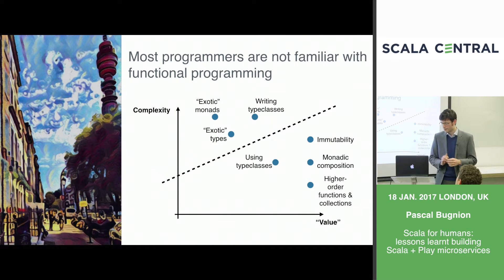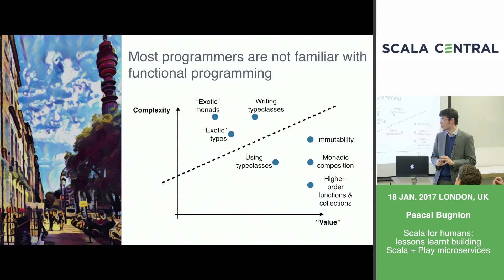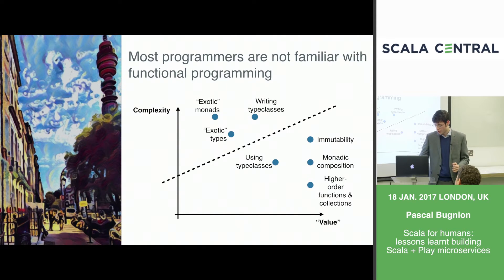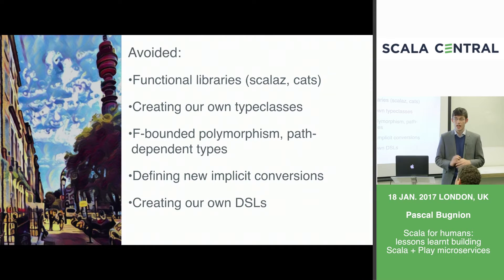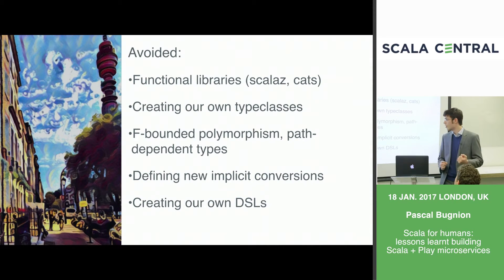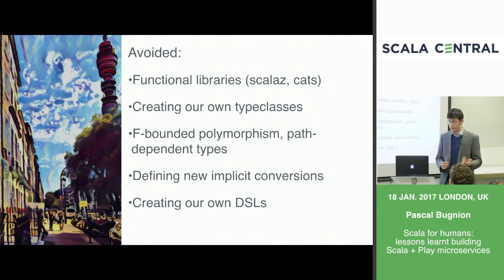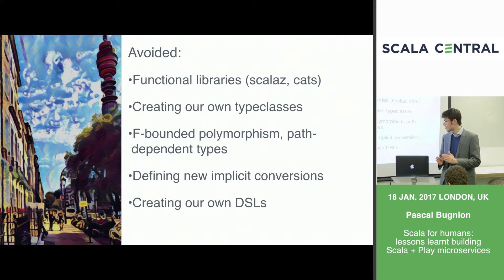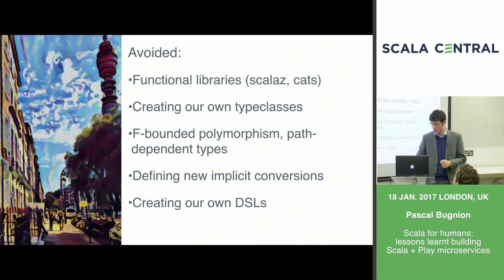We've basically drawn a line and decided to use everything below it — the more accessible features — and not things above it. As the team matures, that line may move upward. To summarize: we've avoided functional libraries like Scalaz/Cats, avoided creating new type classes, avoided defining new implicit conversions except where necessary, and avoided creating our own domain-specific languages, which often make code less readable.